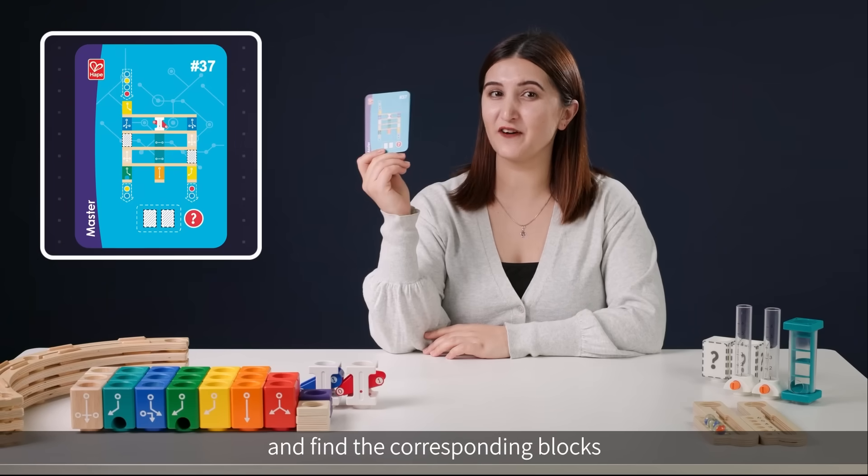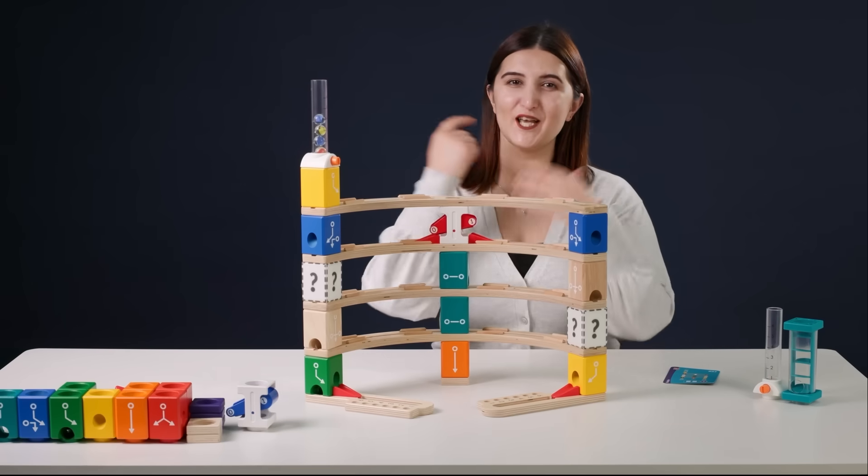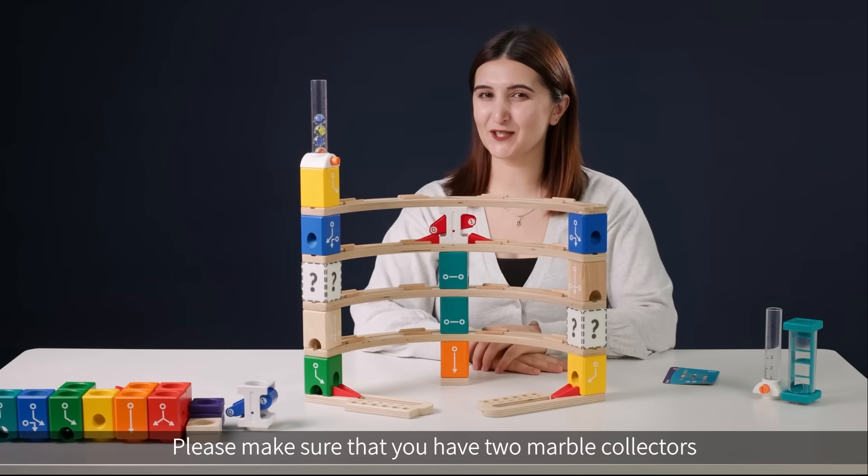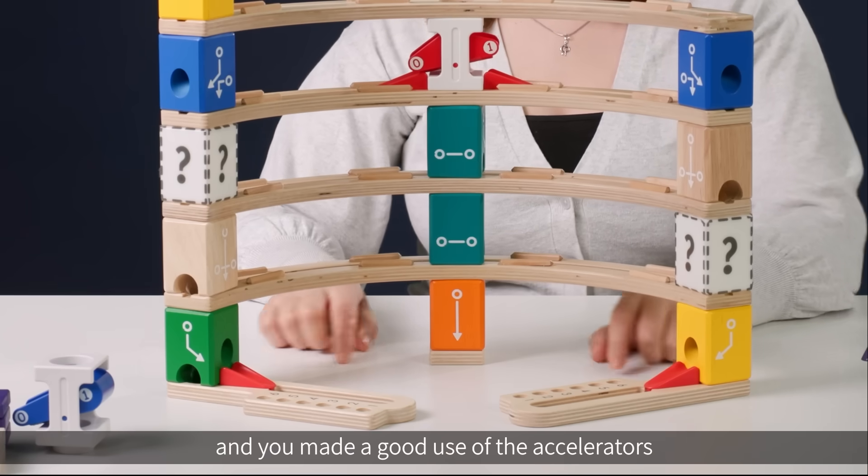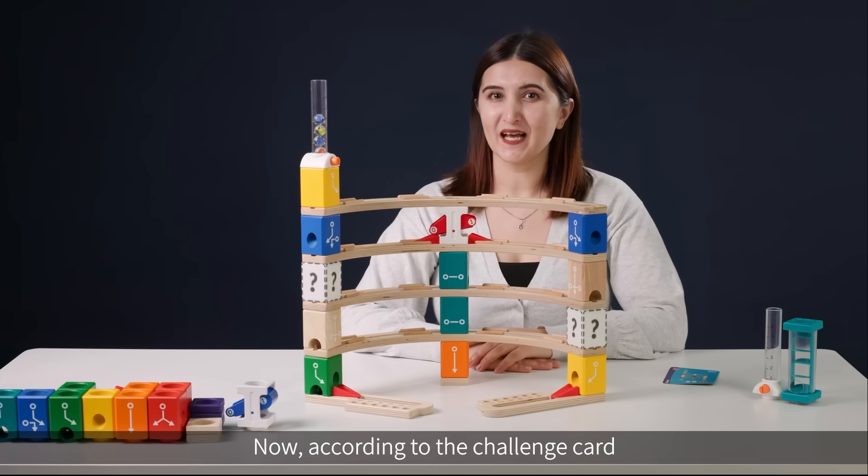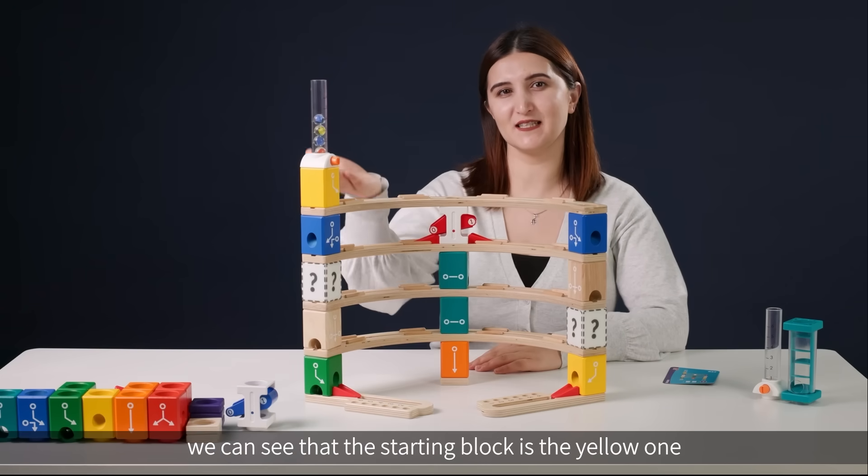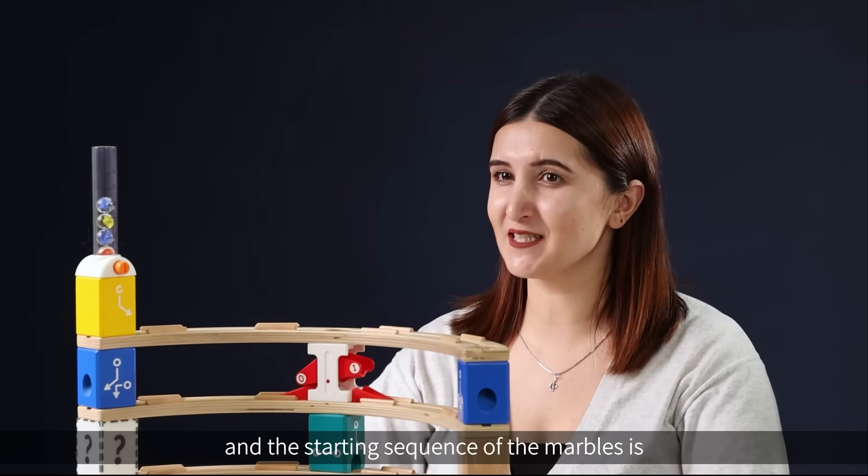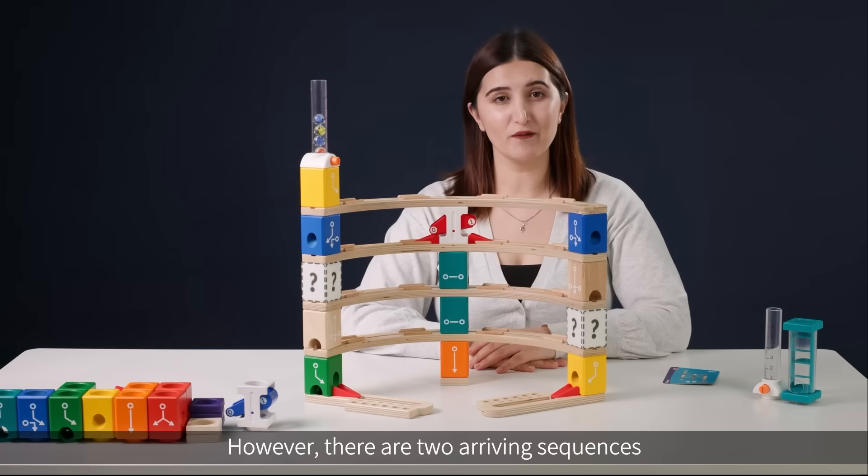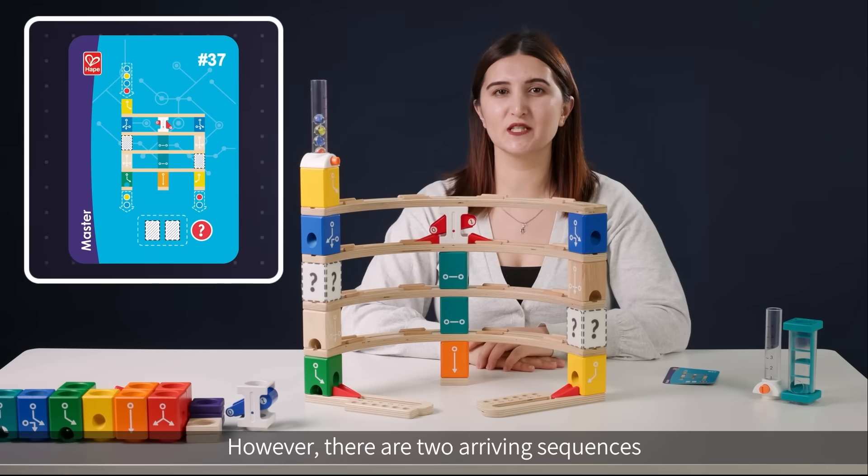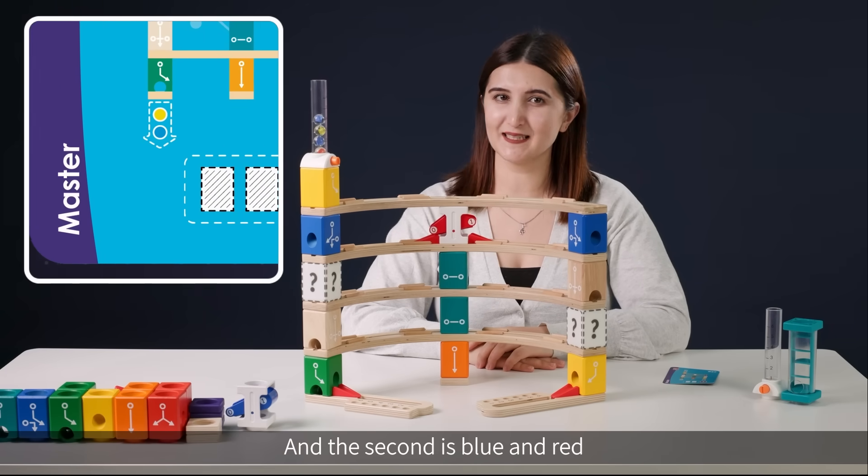Here is our build. Please make sure that you have two marble collectors and you made good use of the accelerators. Now according to the challenge card, we can see that the starting block is the yellow one and the starting sequence of the marbles is red, blue, yellow, blue. However, there are two arriving sequences: the first is blue yellow and the second is blue and red.